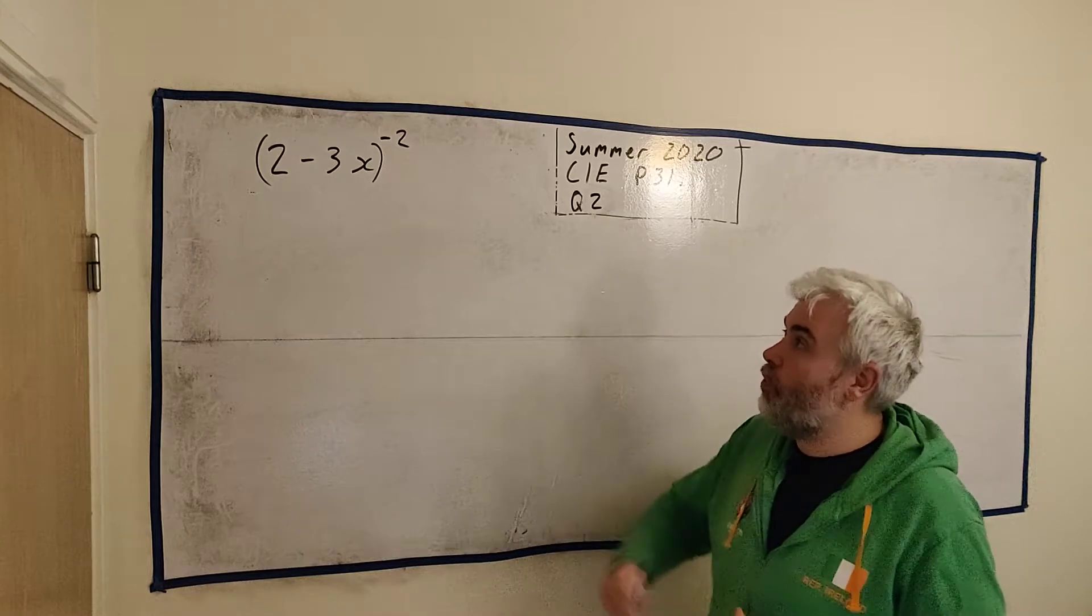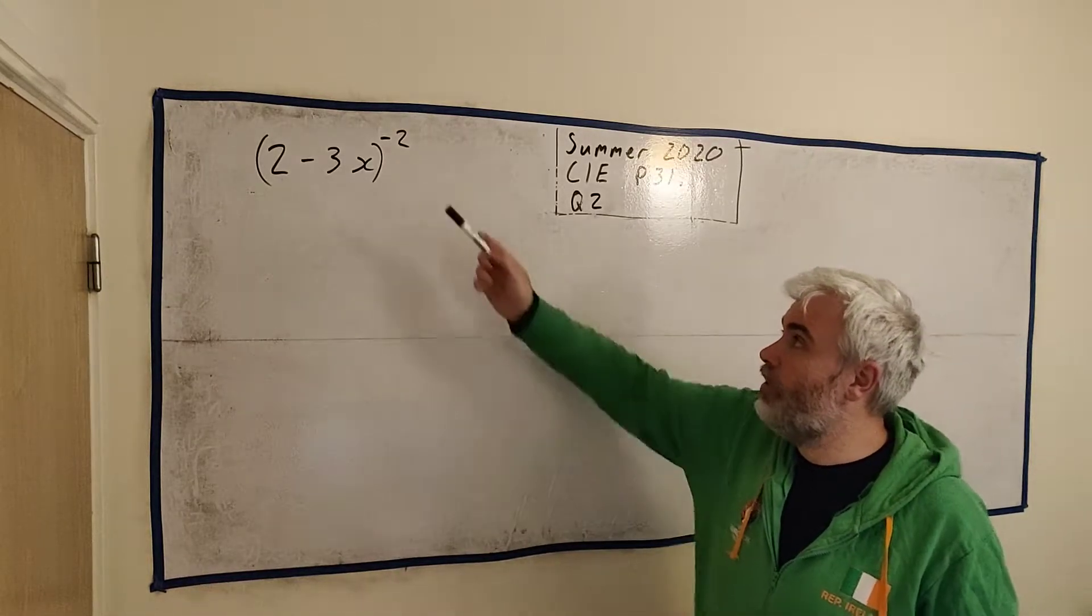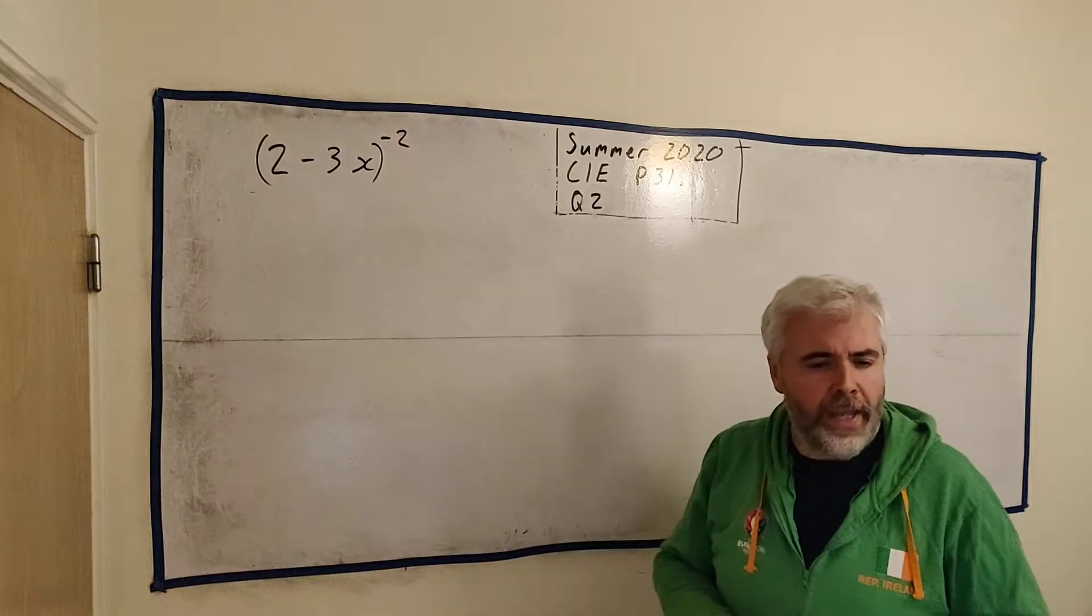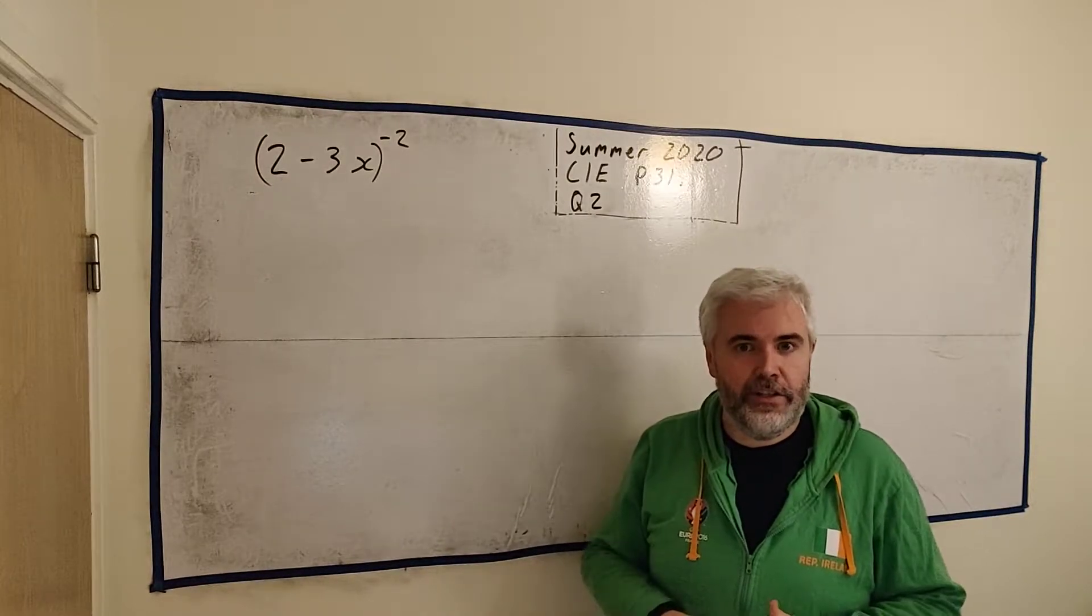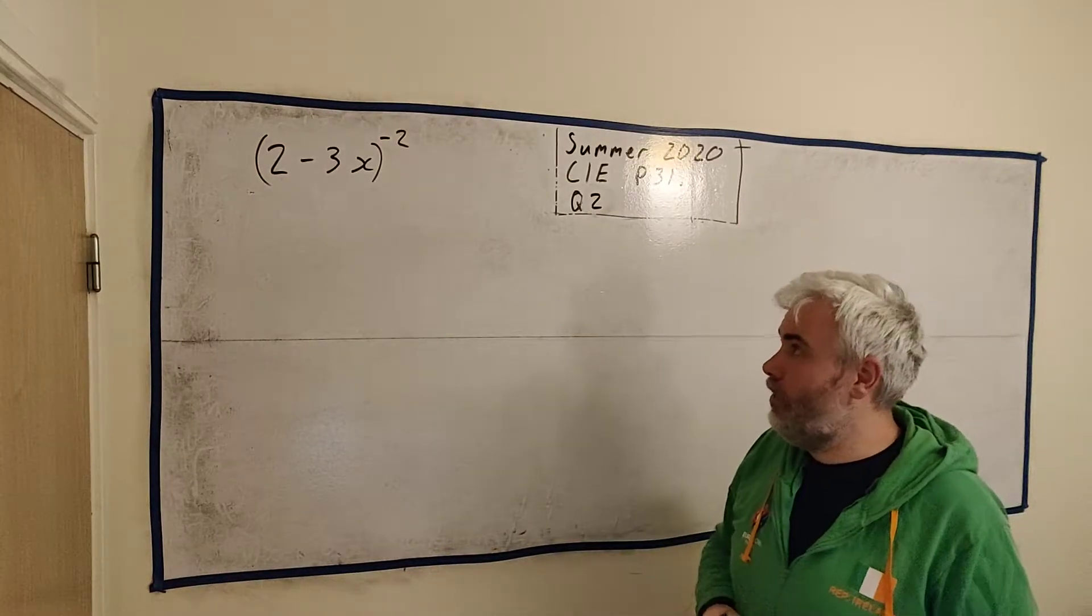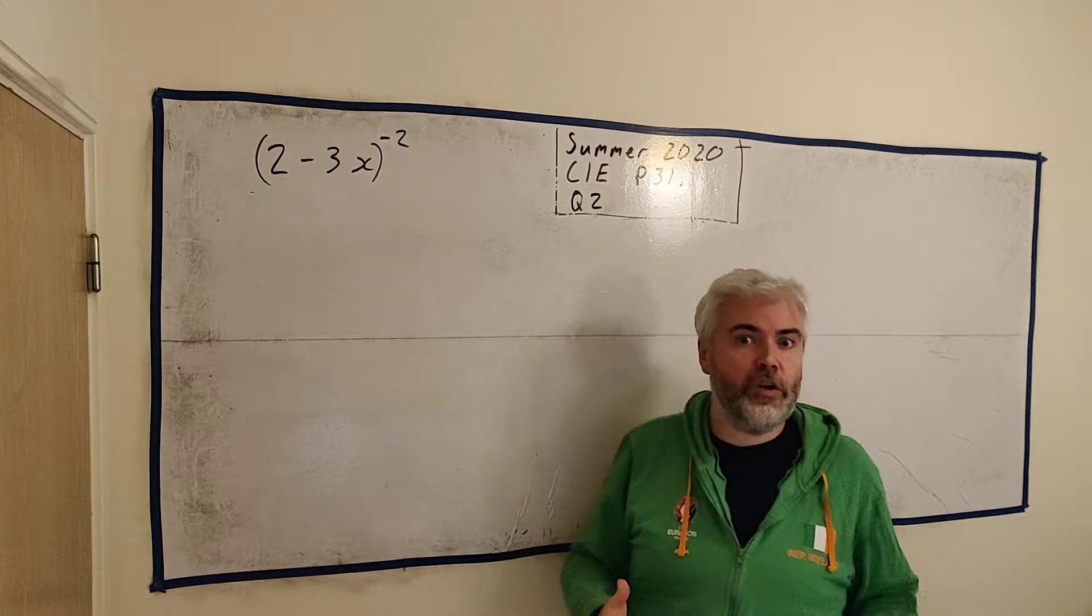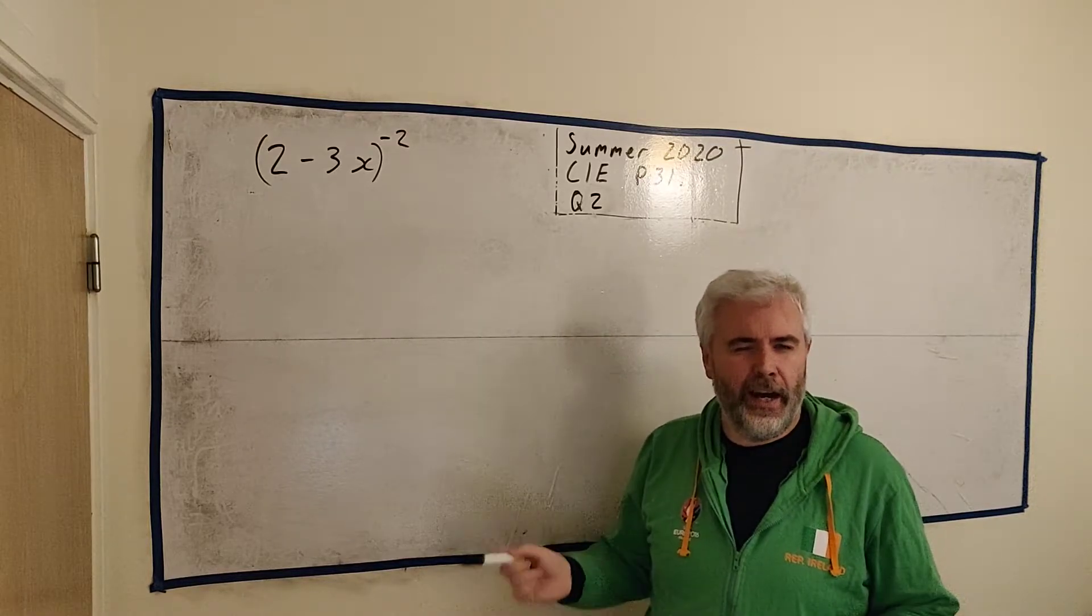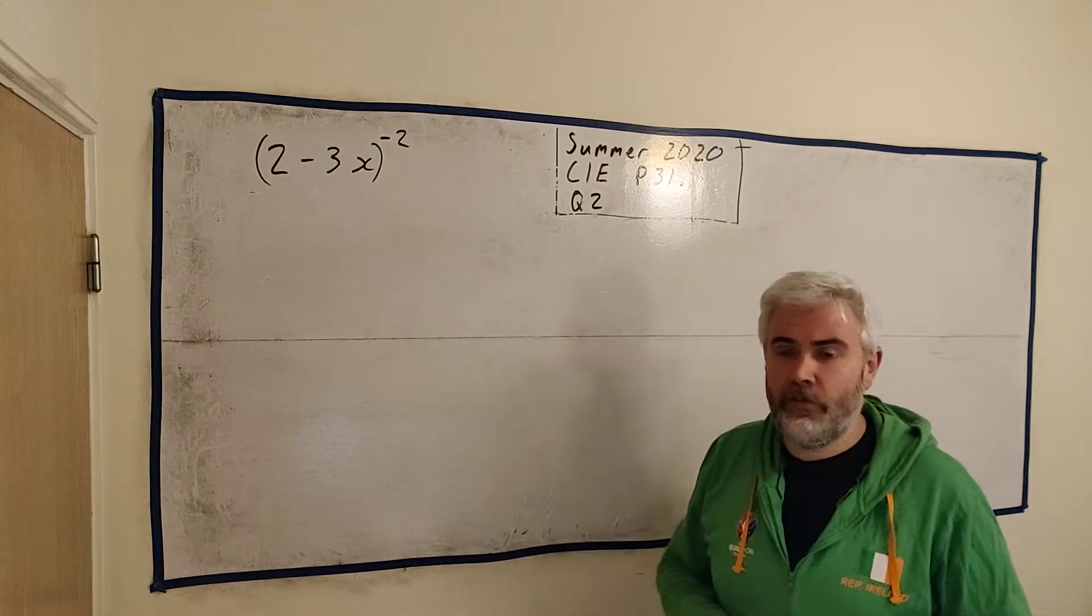This question asks us to expand this expression here, 2 minus 3x all to the power of minus 2, in ascending powers of x. To do this we're going to need to use the McLaren series which is a special case of the Taylor series. I'm not going to go into too much detail on what that is, it deserves its own class which I don't have on the channel at the moment but hopefully soon I will.